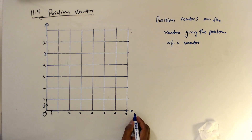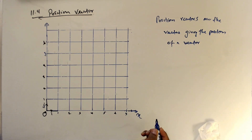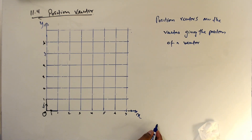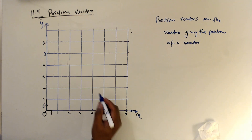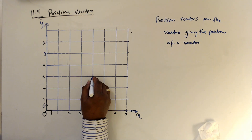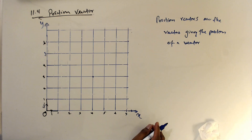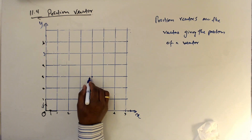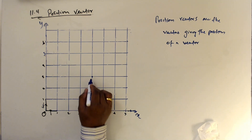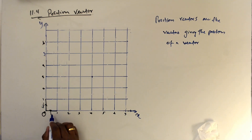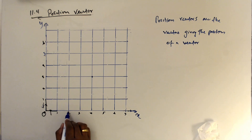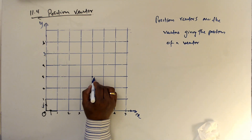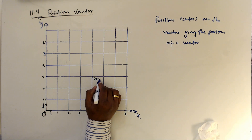I have one point for a position vector. This is an xy grid, a Cartesian frame. I will select this point and do a bit of research. What is the coordinate of this point? The coordinate of this point is 1, 2, 3, 4 and 1, 2, 3. The coordinate of this point is (4, 3).